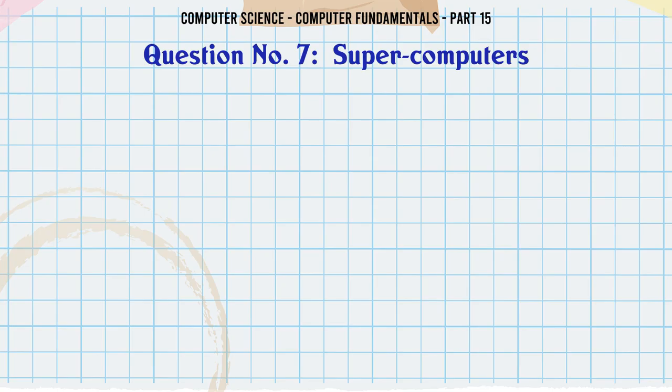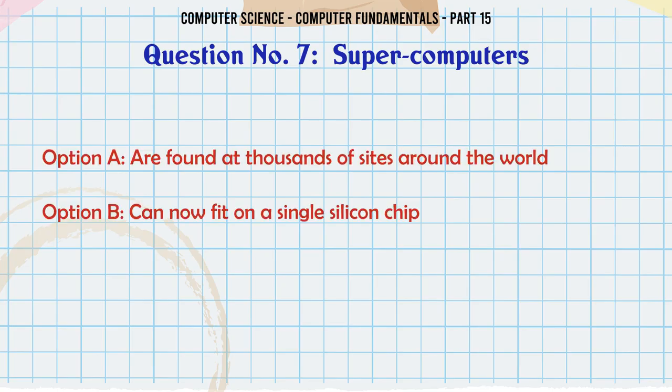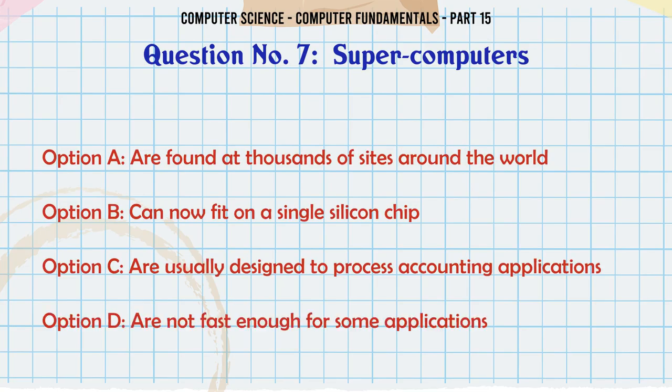Supercomputers: A. Are found at thousands of sites around the world B. Can now fit on a single silicon chip C. Are usually designed to process accounting applications D. Are not fast enough for some applications.